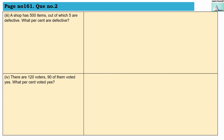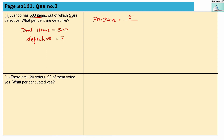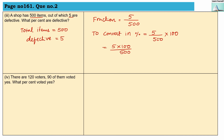Question number 3: a shop has 500 items, out of which 5 are defective — what percent are defective? Total items = 500, defective items = 5. Fraction = desired quantity divided by total quantity = 5 by 500. Multiply by 100: 5 × 100 divided by 500. The 500 and 5 × 100 simplify — 100 cancels with 500 leaving 1. So the answer is 1%.